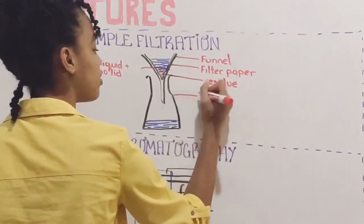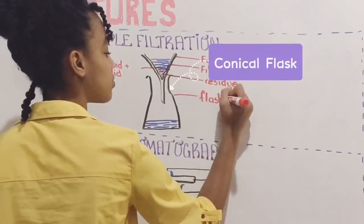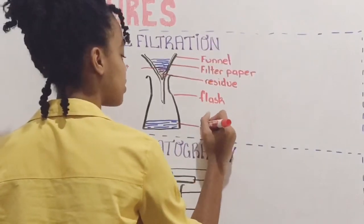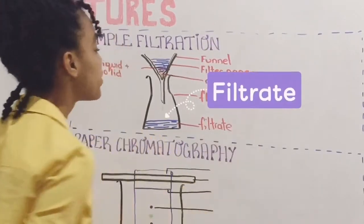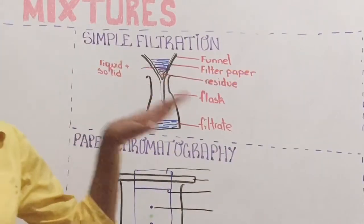This is a conical flask. And this is the filtrate. Great, so we've labeled our diagram.